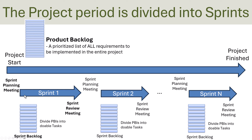They work with these items in the sprint. At the beginning of the sprint they have a sprint planning meeting where they pick out items from the product backlog and start working on them. When the sprint is finished, they have a sprint review meeting where the team comes together and demonstrates the parts that have been done. When that sprint is finished, they have a new sprint planning meeting and start on a new sprint. That's the whole process of working with sprints in Scrum.